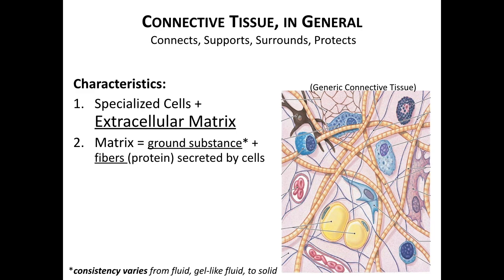All connective tissue can be defined as specialized cells in an extracellular matrix. The matrix consists of two components: the ground substance and the fibers that are secreted by the specialized cells. The ground substance is the background material whose consistency may range from fluid, as in blood, all the way to mineralized matrix, as we'll see in bone. As we go over each specific connective tissue, we'll discuss the details there.